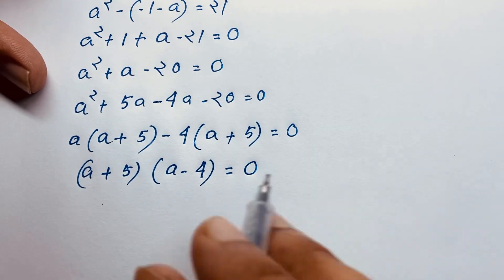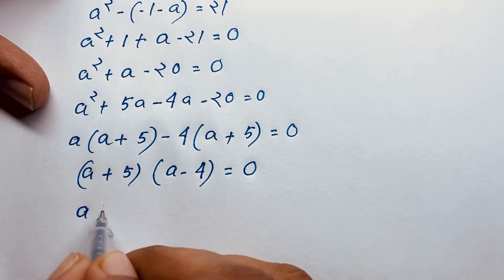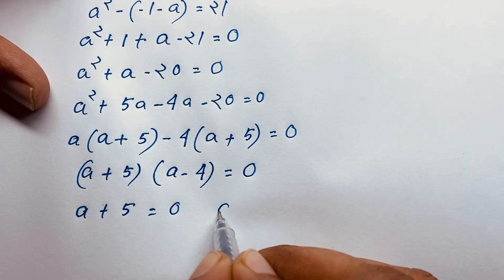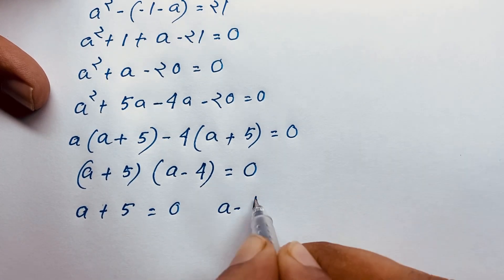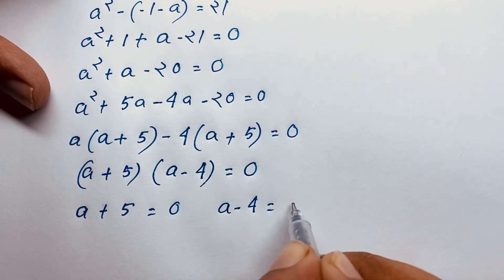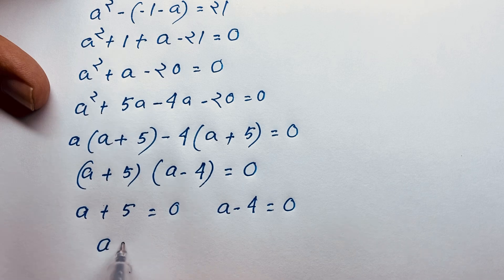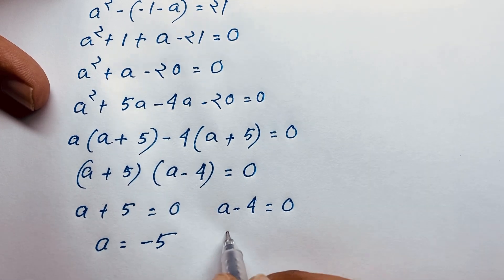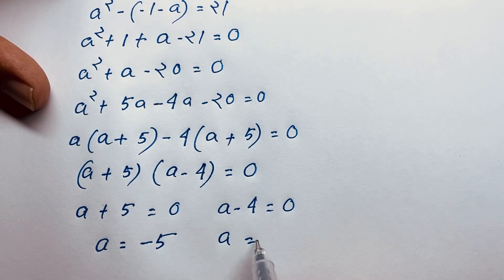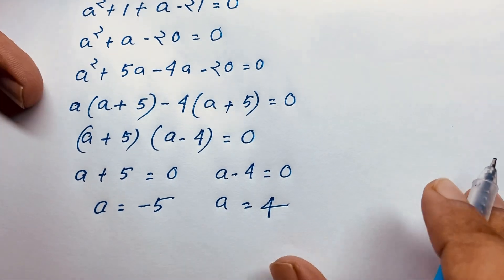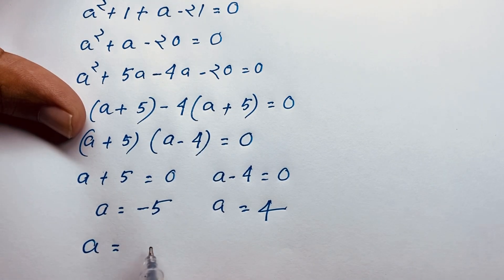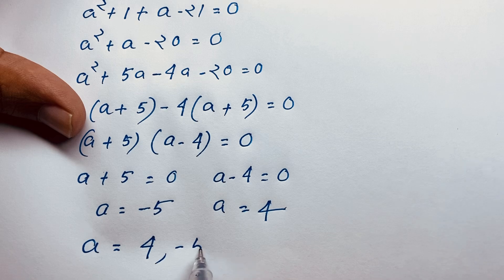This gives us two cases: a plus 5 equals 0, or a minus 4 equals 0. So we find a equals minus 5 and a equals 4. Our final answer for a is 4 and minus 5.